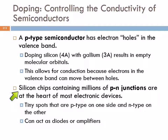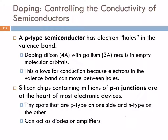Silicon chips have millions of p-n junctions — tiny areas that are p-type on one side and n-type on the other. These can act as diodes or amplifiers, and this is the basis of computer technology. Computers come down to chemistry.